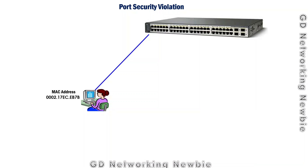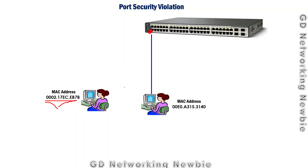In this video we are going to discuss port security violation. In our previous video we discussed port security, which is an interesting feature on the switch where we can configure any port of the switch — for example, this port — to accept frames with a specific MAC address only. If any other user with a different MAC address tries to access the switch, the switch will discard those frames.